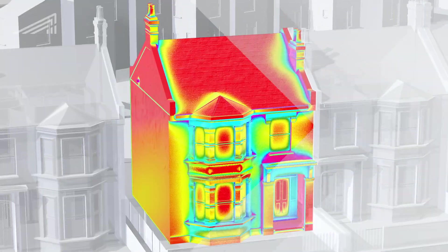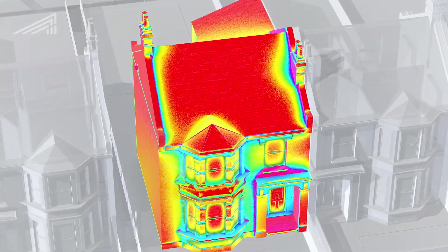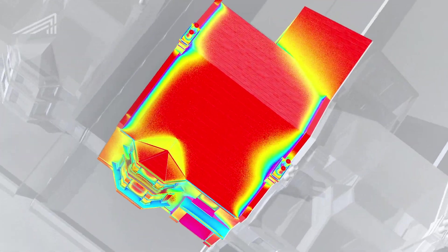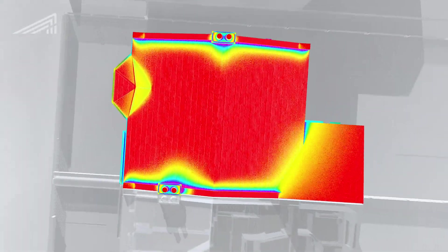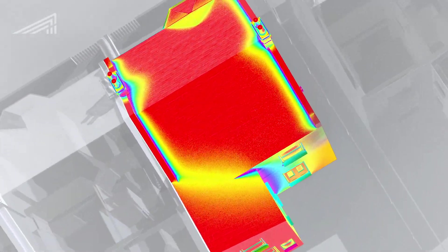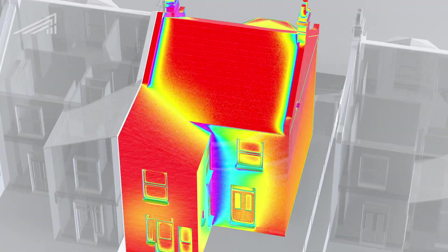Our first step was to survey the building. We carried out a number of efficiency tests, including air pressure and thermal imaging. This helped us identify exactly where the house was wasting energy and losing heat.